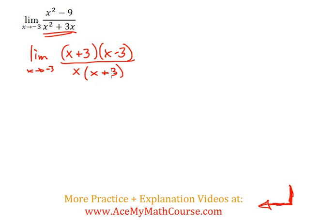Now, can I cancel anything out? The x plus 3 over x plus 3, they're gone. This will be limit as x approaches negative 3 of x minus 3 over x.